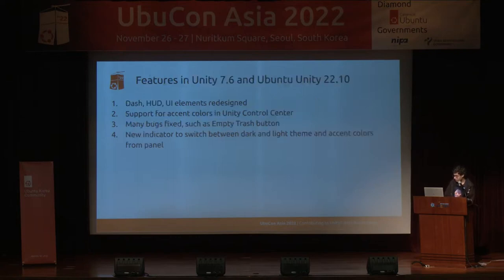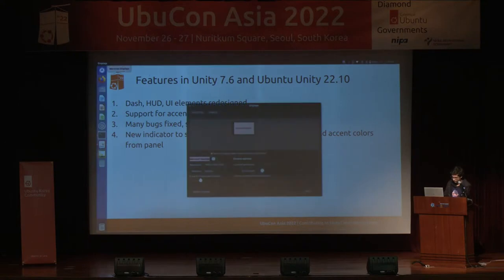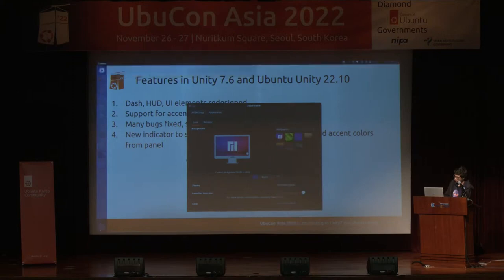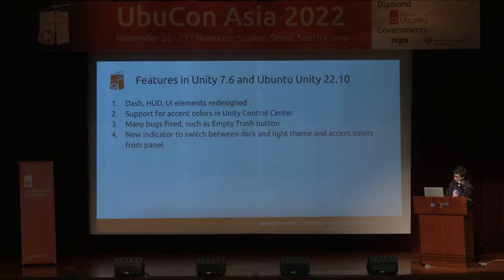The features in Unity 7.6 include Dash Heart, a redesigned URL and all UI elements, and support for accent colors was added to Unity Control Center. Many bugs were also fixed, such as the empty trash button not working. A new indicator was added in Ubuntu 20.10 to switch between dark and light themes, and accent colors from the panel.